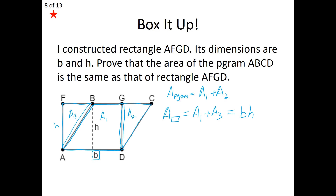There's one other piece of information we need. Take a look at the two triangles formed: triangle ABF and triangle DCG. As it turns out, we can prove those triangles to be congruent. When we prove those triangles congruent, we get the area congruence postulate, which tells us that A sub 2 equals A sub 3. We're going to use that last piece of information, combine a few pieces together, and find the area formula of our parallelogram.